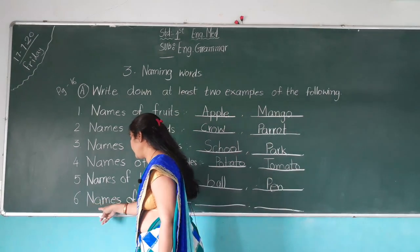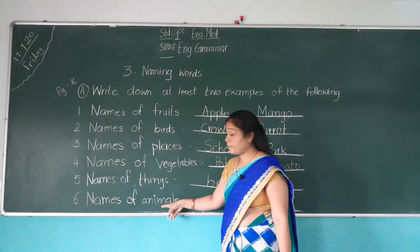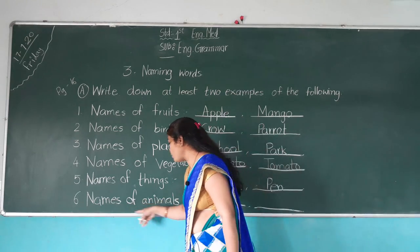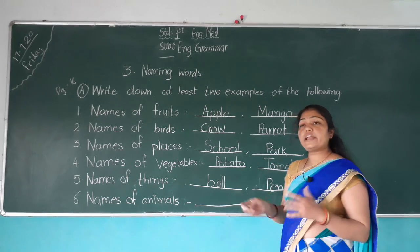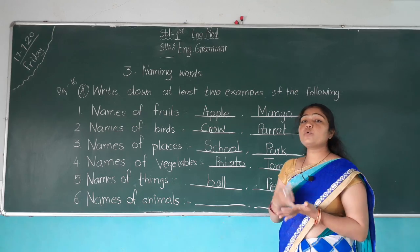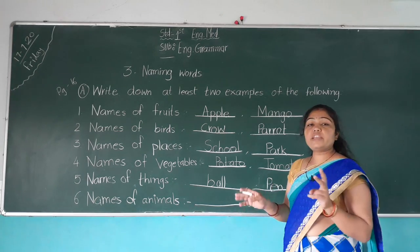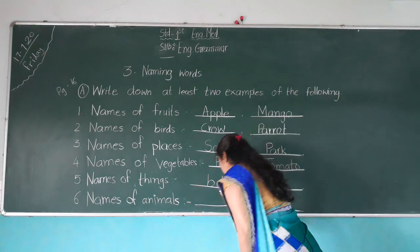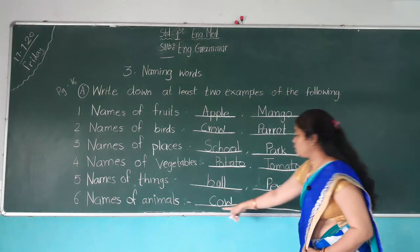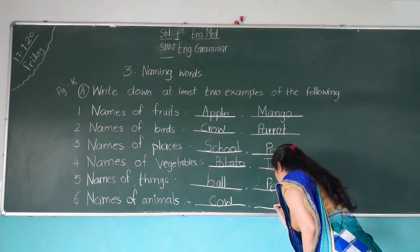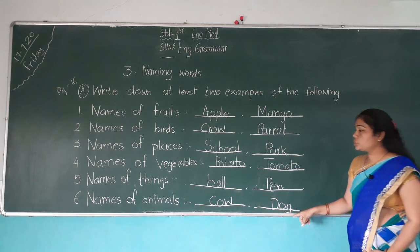Sixth number: Names of animals. We have to write two names of animals. We can write monkey, cow, dog, cat, buffalo — everything — name of animals, but we write only two. So write down here cow — C-O-W — and dog — D-O-G.